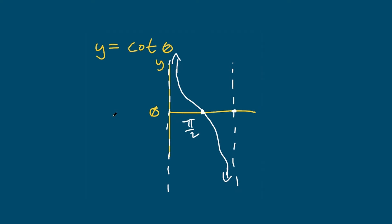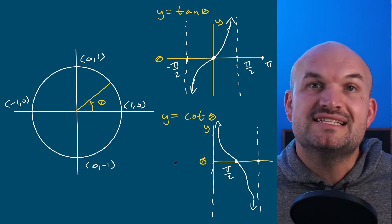For cotangent, I do the same thing, but the initial period is only positive. Cotangent of theta is x over y for points on the unit circle. At angle zero: one over zero is undefined — asymptote. At pi halves: zero over one equals zero — dot at (π/2, 0). At angle pi: negative one over zero is undefined — another asymptote. Using additional points, you can see the shape and pattern of cotangent is the reverse direction of the tangent graph.